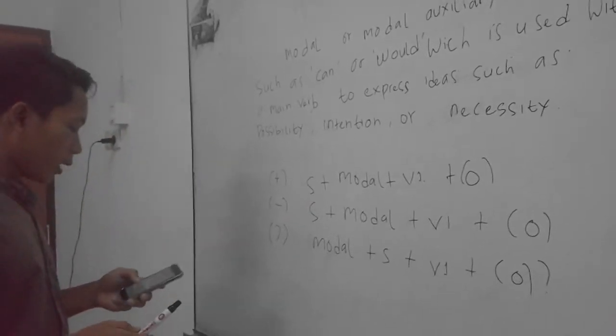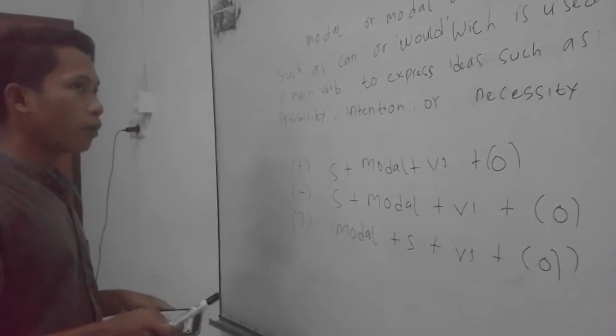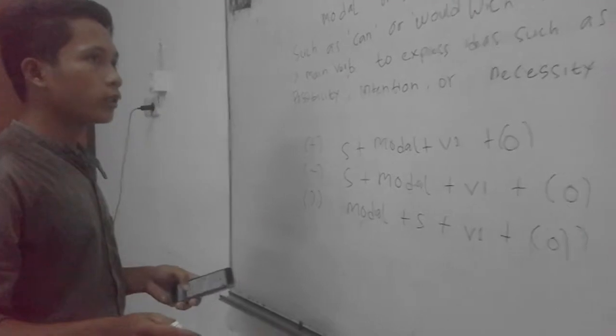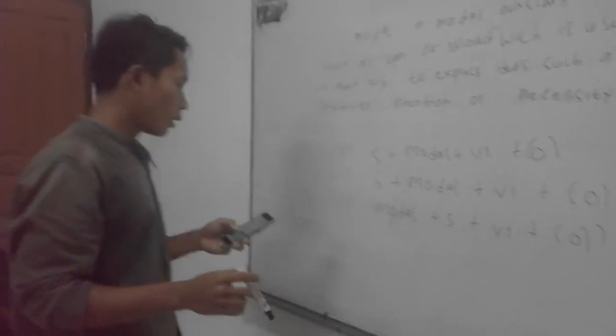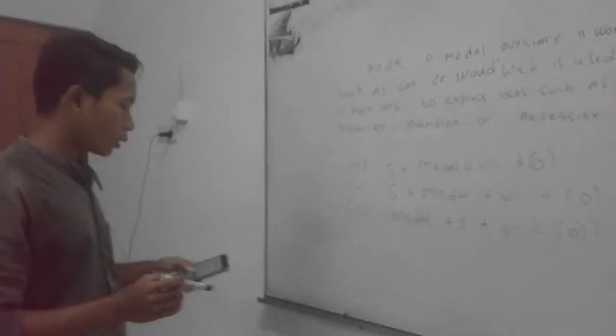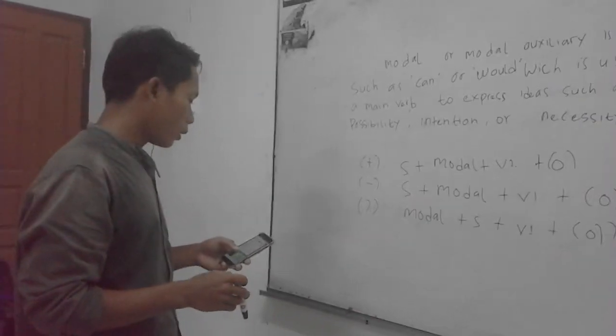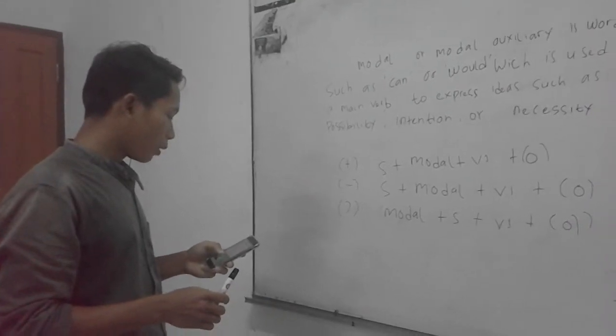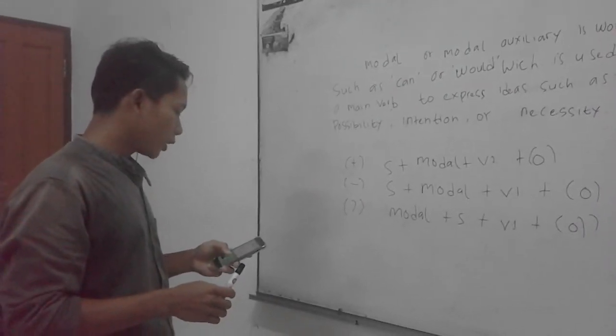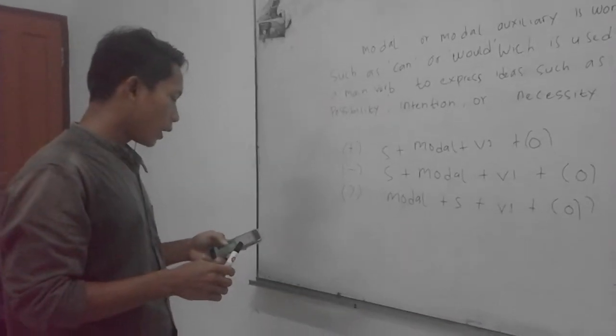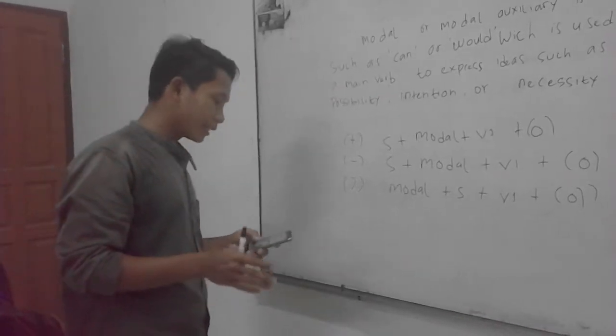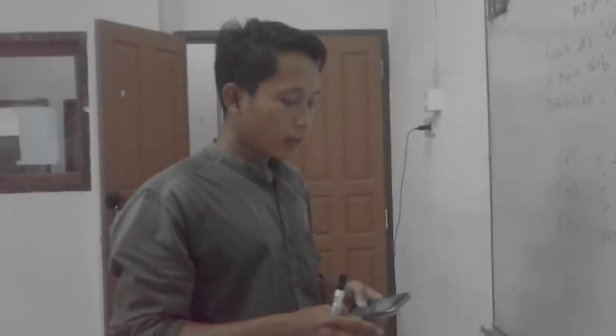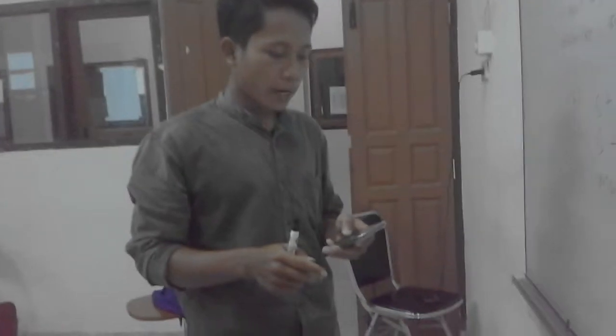Use of Modal verb, you can use, we can use Modal. One, prevention. Two, ability. Three, obligation. Four, probability detection. Five, life, obviously. Six, at best. Seven, possibility. Eight, probability. Four, probability.